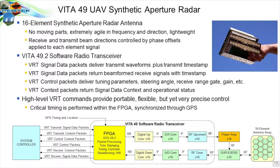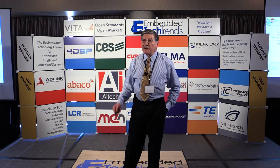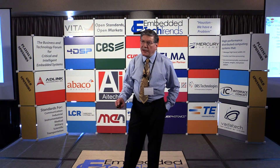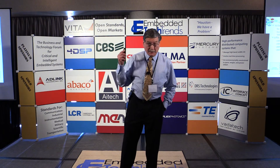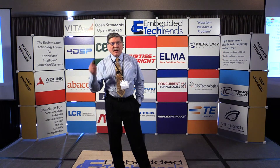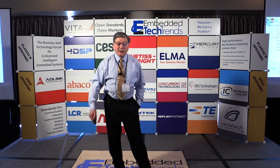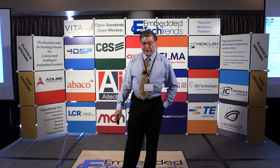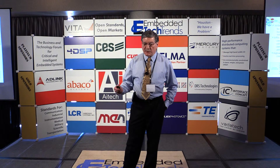Another application going up the chain could be a synthetic aperture radar system where you need a software radio with receiver and transmitter assets, power amplifiers, and an array antenna — perhaps on a UAV with no moving parts, a really nice way to do radar. If you build this according to a Vita 49.2 standard, you can handle transmit packets, receive packets, control packets, and all the context packets to implement that radar transceiver with precise timing of exactly when outgoing pulses go and your range gate for looking at signals coming back.